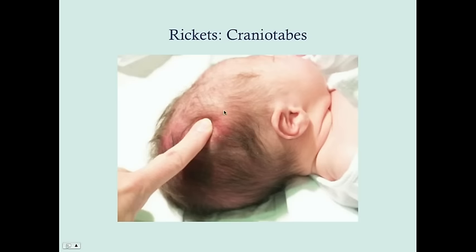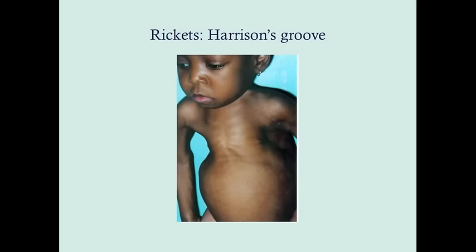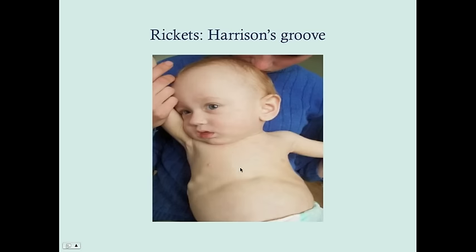This is craniotabes — the soft skull. Note that this is on the skull bone itself; it's very soft and the texture is a lot like the fontanelles, but it's not located where the fontanelles are. This is Harrison's groove, formed because the ribs are soft. When the child breathes in, there is a collapsing where the diaphragm inserts, creating this line. Here it is much more obvious in this child — you can also see the rachitic rosary on the right side.